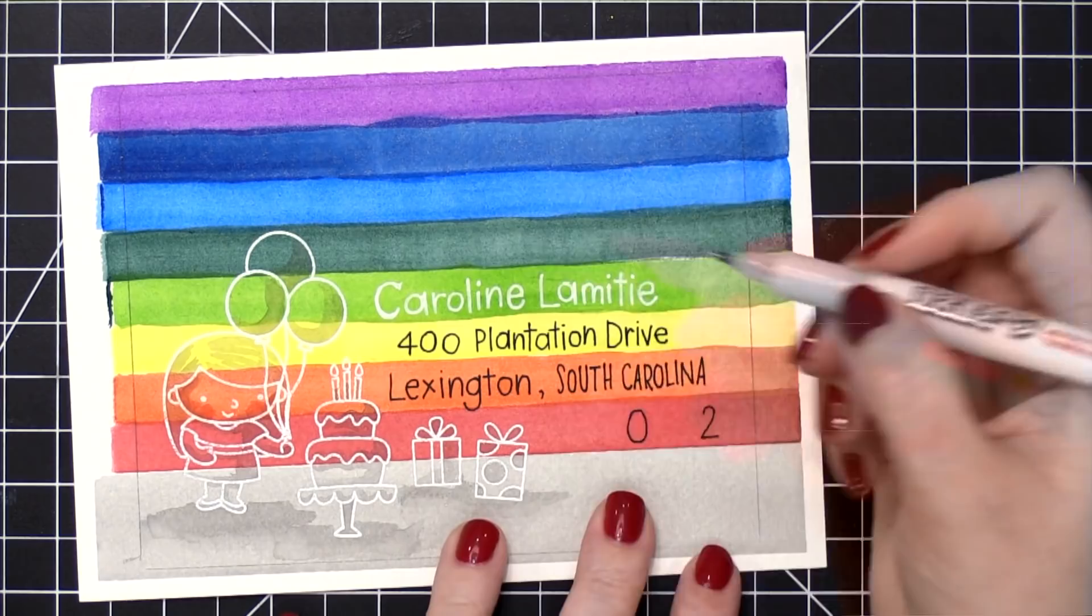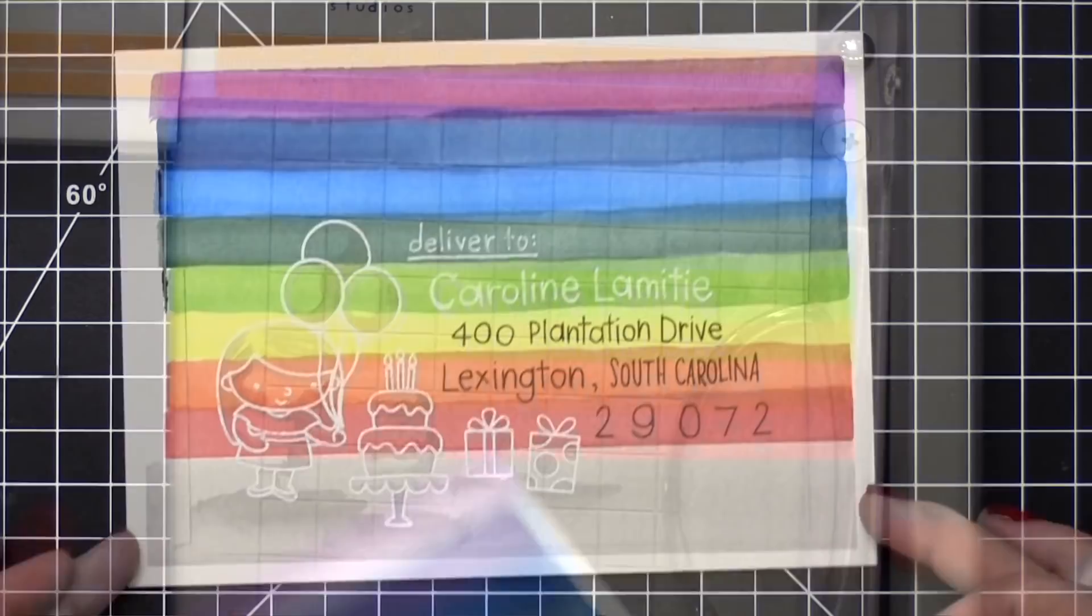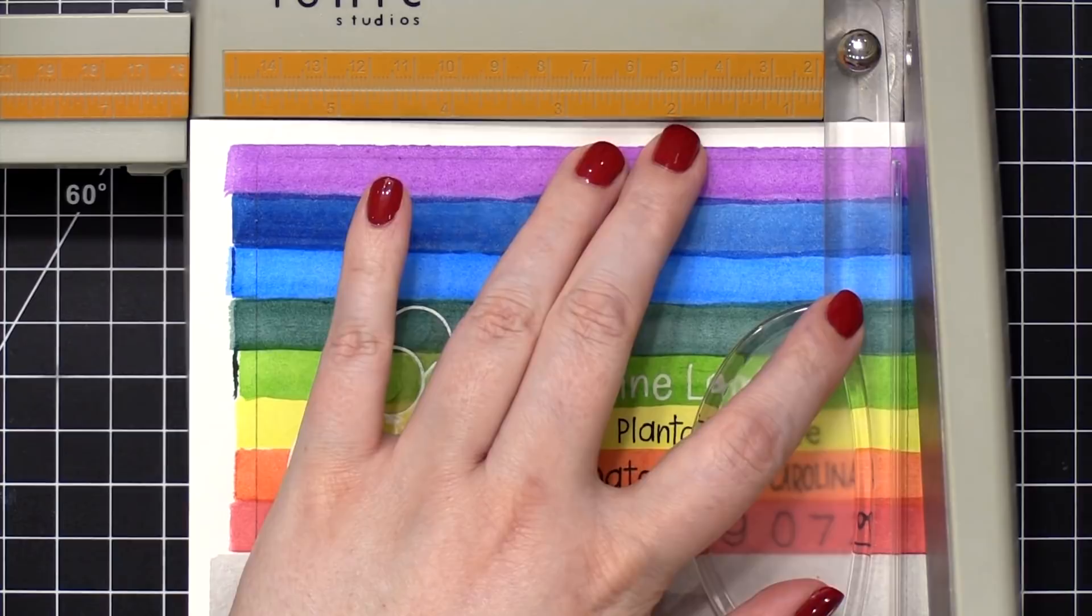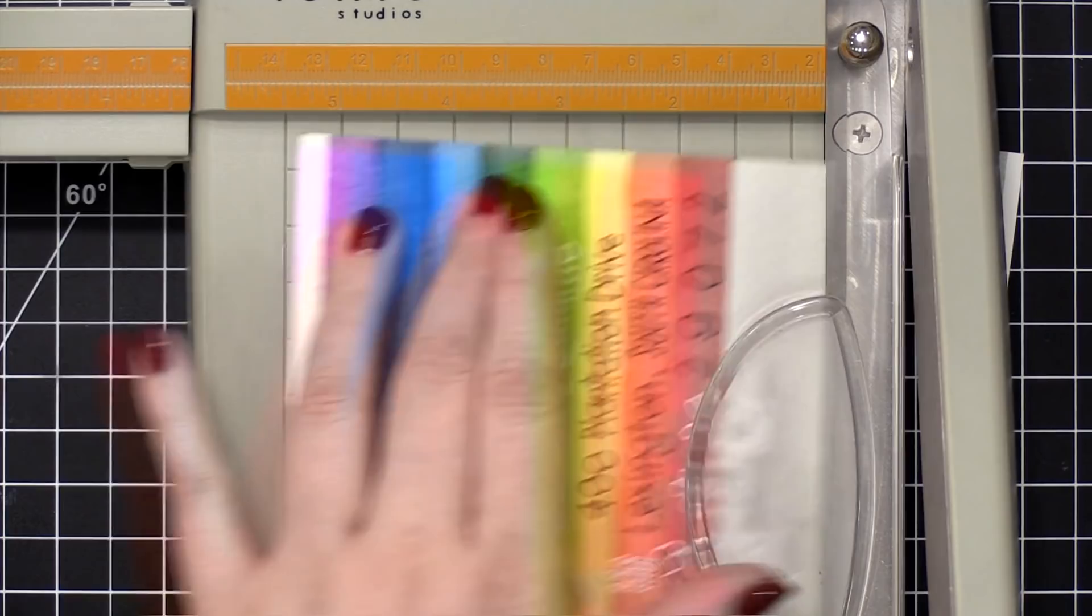I did add a line that says deliver to, just to make sure that it goes to the right place. I then used my paper trimmer, this is the Tonic Guillotine Trimmer, and I trimmed off the right side and the bottom, right along those pencil lines that I drew earlier. And I didn't cut off the other corners, because I'm going to adhere it, and then cut off those corners.